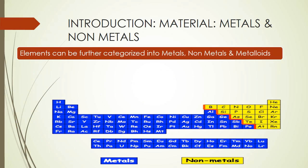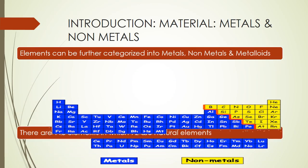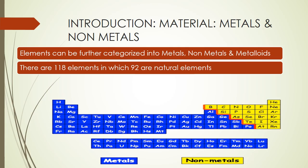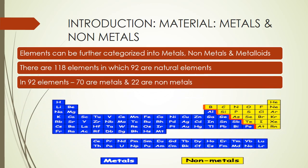These elements can further be categorized into metals, nonmetals, and metalloids. There are 118 elements in total, of which 92 are natural elements. Among those 92 elements, 70 are metals and 22 are nonmetals.